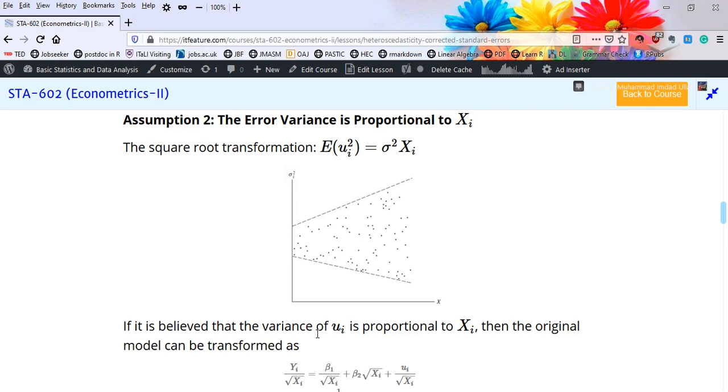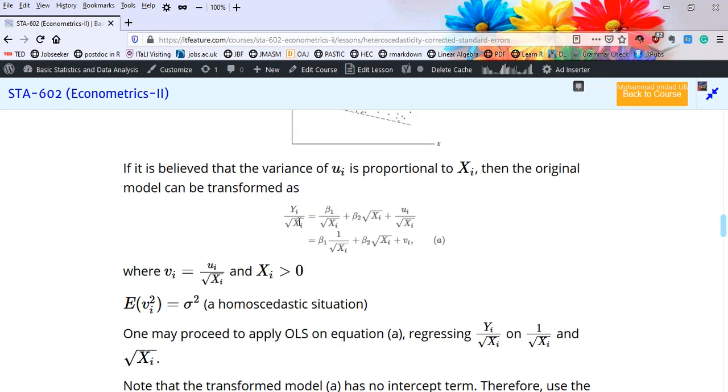Then the original model can be transformed by applying the square root transformation. We need to transform the model for heteroscedasticity remedy. For this purpose, square root transformation should be applied to transform the original model. We divide both sides of the model by square root of X_i.